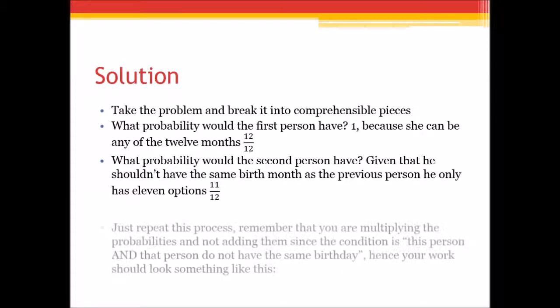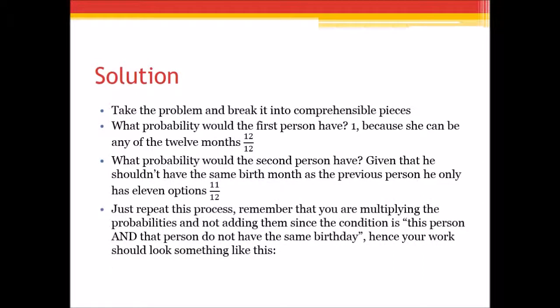Now let's repeat that over and over again and we're multiplying these probabilities, and the reason being is because it's this person and that person that do not have the same birthday. That's the way I like to think of it because I remember that and usually means multiplication. So we're multiplying these different people that are coming up.